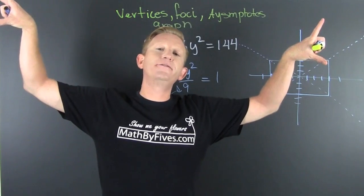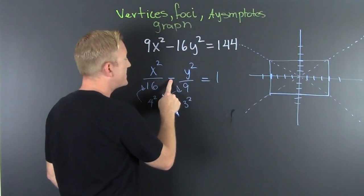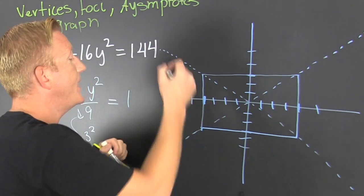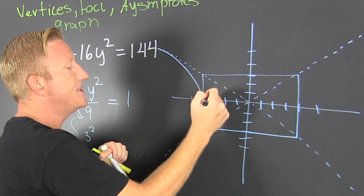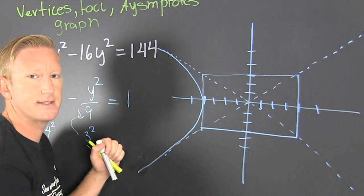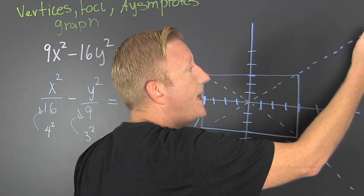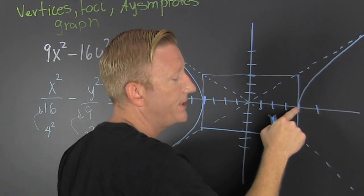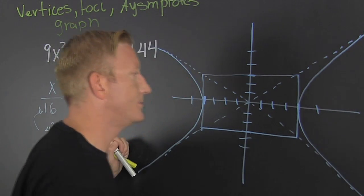The curve comes from the asymptote, kisses that box, and then goes back out down that asymptote. It does the same thing on this side — it comes from that asymptote, kisses that box right there at that point, and then goes back to that asymptote.